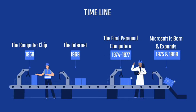In 1974 to 1977, there is the first personal computer. IBM and Apple were just a couple of the brands that put out the first personal computer. In 1975 and 1989, there is the invention of Microsoft — it is born and expands. Microsoft made a program that was compatible with IBM computers. This let more people come into contact with the well-known program.